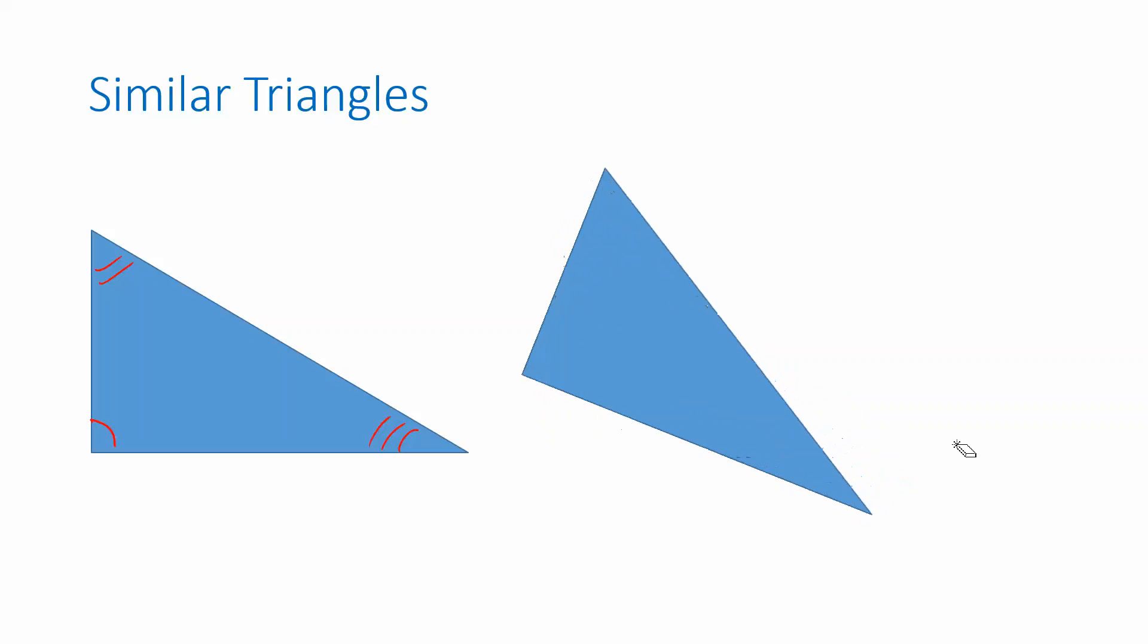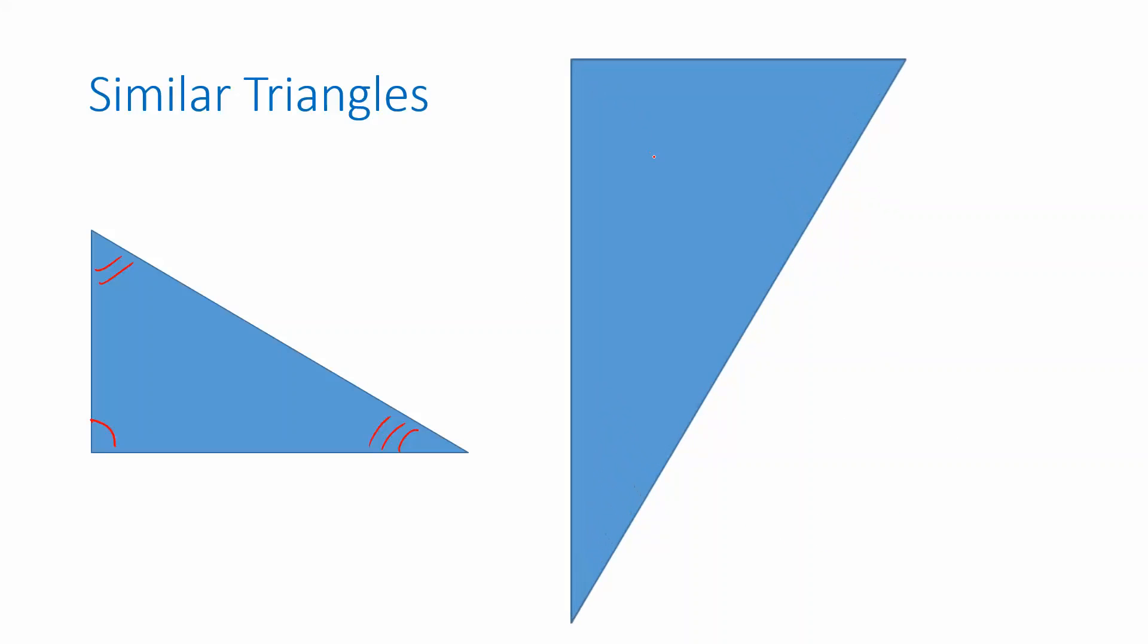So for example, if I rotate it, well, they're really congruent still, because I haven't changed any of the lengths. But what if I then also make this one bigger? Now they're no longer congruent. But when I did the rotation, these angles matched up. And the resizing didn't change the angle.